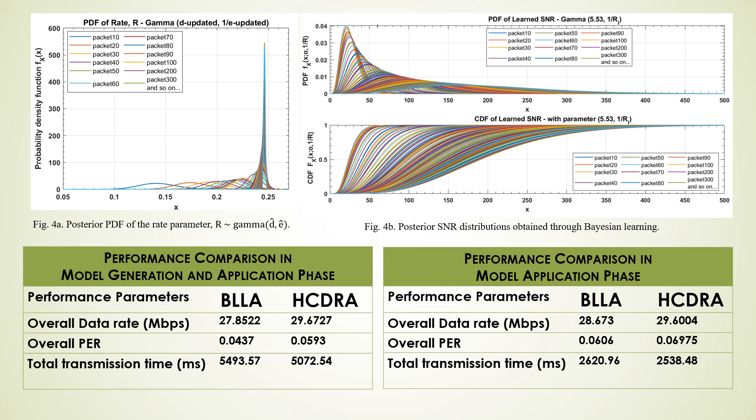Learning the rate parameter and updating the posterior distribution of the SNR all happen in the model generation phase. In other words, at the end of the model generation phase we have obtained the learned CDF of the SNR. In the model application phase, this distribution is sampled and the MCS is selected based on the sampled SNR for each packet transmission, avoiding the frequent CSI feedback overhead.